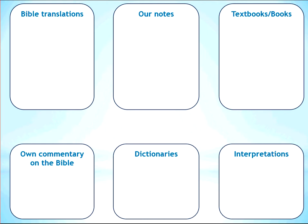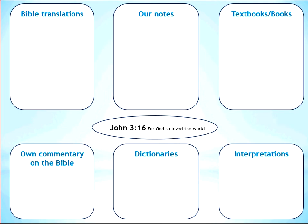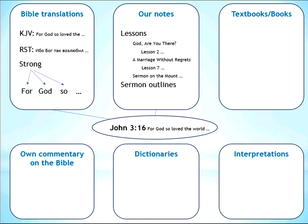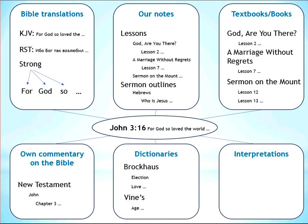So when we read the Bible, like for example John 3:16, we have the ability to see this verse in different Bible translations, the meaning from Strong's concordance, where this verse is mentioned in lessons that we have studied, in notes from sermons that we have listened to, in our other notes connected to our personal devotions, our personal comments about the verse or about the individual words of the verse, where this verse is mentioned in textbooks, other books, concordances and commentaries. We can look at this verse from different perspectives and contexts, and we can be reminded of what we have already studied about this verse.